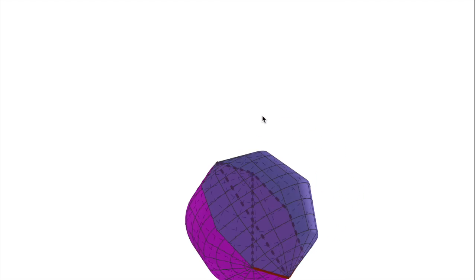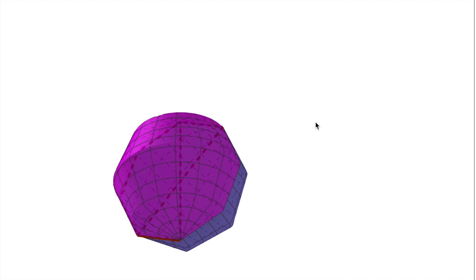Some polysphericons are special because they have a single component, and so when you roll them, they work on their whole surface.